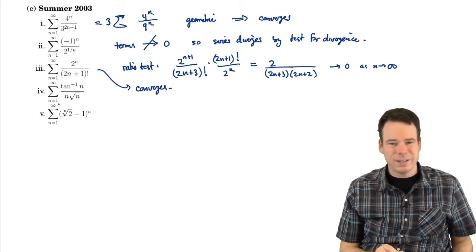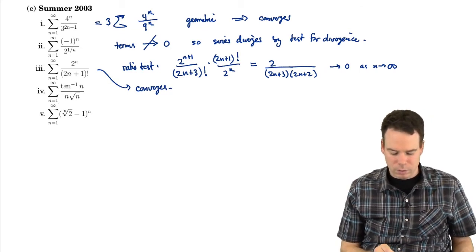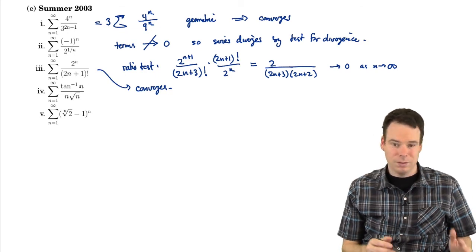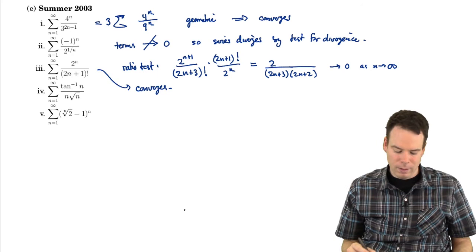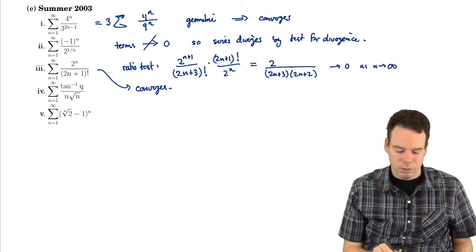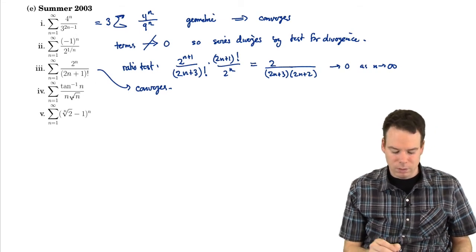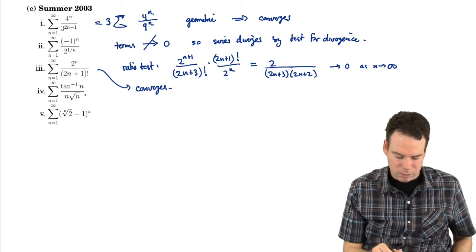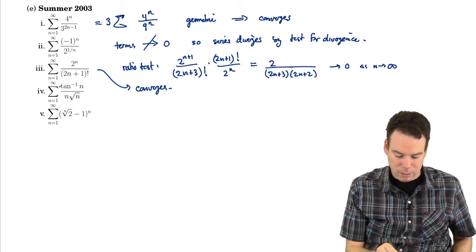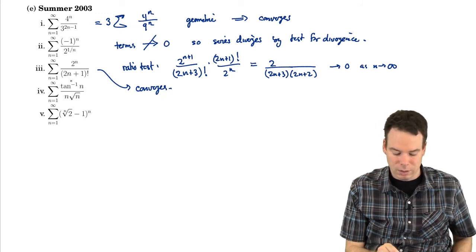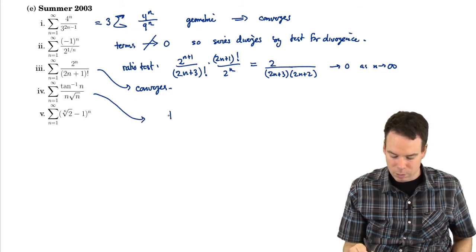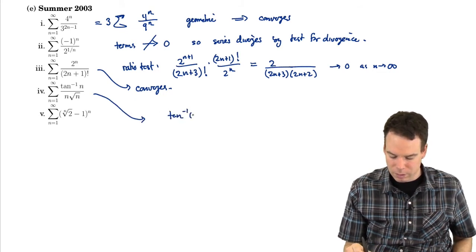How about this next one? Well as n goes to infinity, the top's going to pi by 2, the bottom goes to infinity, so the terms are going to 0. What's tan of a large number doing, arctan, sorry, of a large number, that's positive, so these terms are positive. I've got a sequence of positive terms. What else can I say? But the arctan function doesn't, as I said, it goes to pi by 2, so it's bounded.